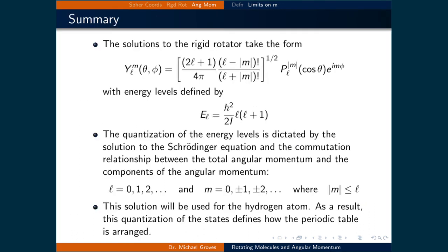In summary, we calculated the solution to the Schrödinger equation for a rotating diatomic molecule, and using the energy levels defined by the solution, we discussed the spectroscopy we would expect to see from it. We saw that the energy levels were quantized due to the limits imposed by the solution to the Schrödinger equation, and by using the commutation of the total angular momentum and the z component of the angular momentum, we saw that the absolute value of M must be less than or equal to L. The rigid rotator result will also be used in the solution to the hydrogen atom, so the limits on L and M help define the structure of the periodic table.